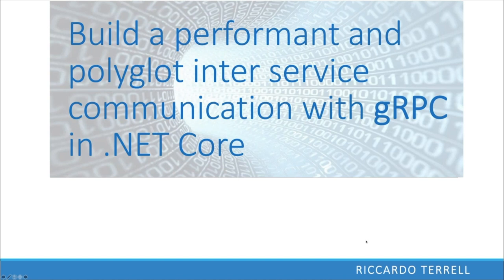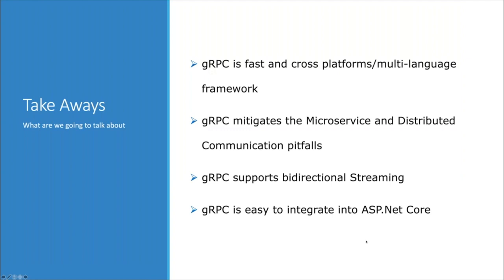Starting with .NET Core 3.0, Microsoft decided to integrate gRPC as part of the framework, which is quite convenient. The main key is fast, high-performance communication aimed at solving and mitigating the issues of communication in a microservice architecture or distributed environment — any sort of service-to-service communication. gRPC makes it much easier to solve these pitfalls, and it has great built-in support for streaming communication: bidirectional, client-to-server, and it integrates well with ASP.NET Core.